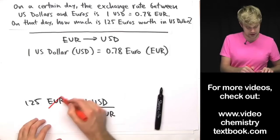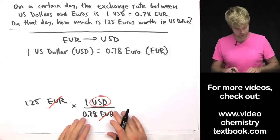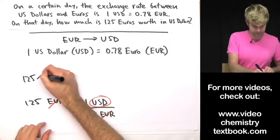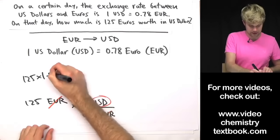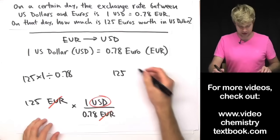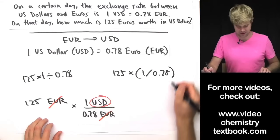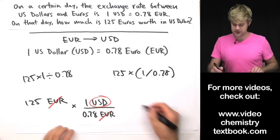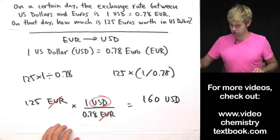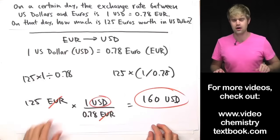Euros on top and Euros on the bottom cancel out, leaving us with dollars — which is what we're looking for. The math is going to be 125 times 1 divided by 0.78, which gives us 160 U.S. dollars. So the dollar is doing pretty well compared to the Euro on this day.